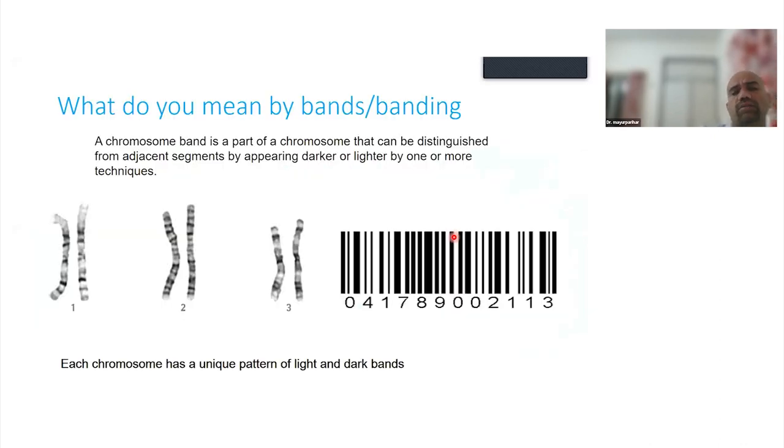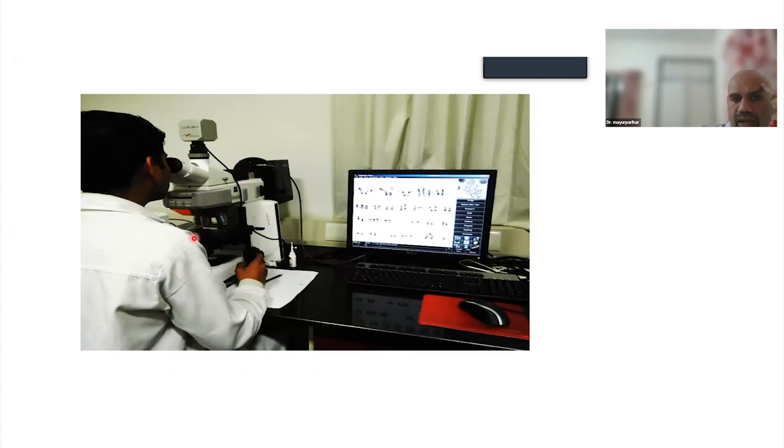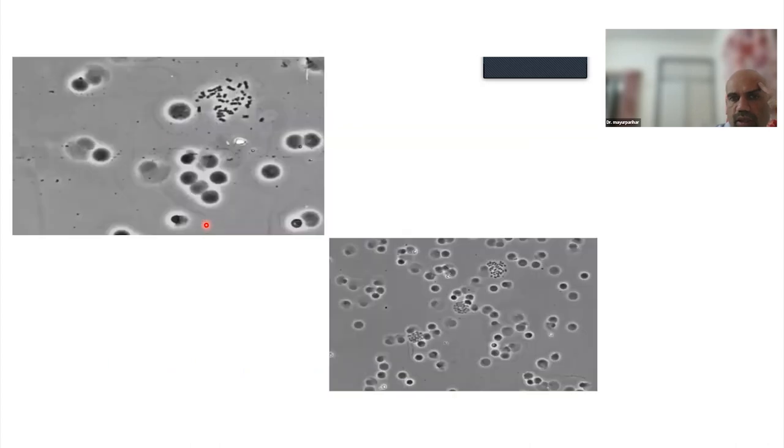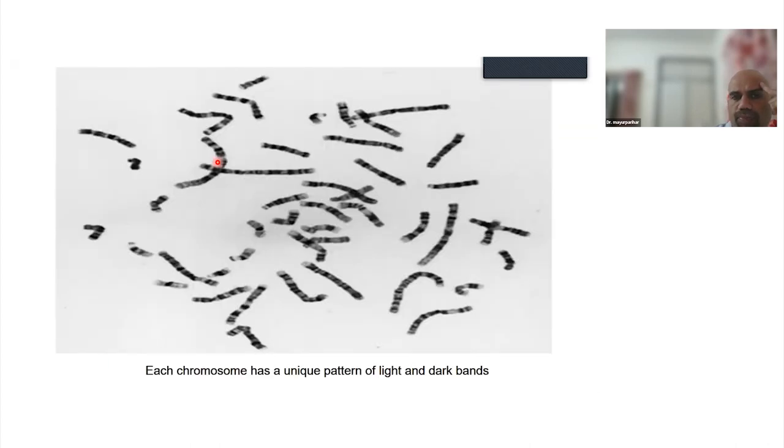What do you mean by bands? We stain the chromosomes with Giemsa stain, and it gives light and dark bands. A chromosomal band is a part of a chromosome that can be distinguished from adjacent segments by appearing darker or lighter. It's just like the barcode you see in supermarkets. You scan the barcode and you get your product. Similarly, a chromosome has light and dark bands. The light bands have active transcription sites, so the light bands produce RNA and protein and the dark bands will not. The more number of light bands a chromosome has means there are more genes present on them.